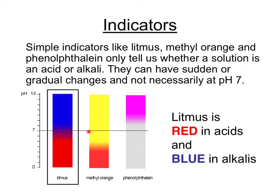Other simple indicators like methyl orange and phenolphthalein don't change at pH 7.